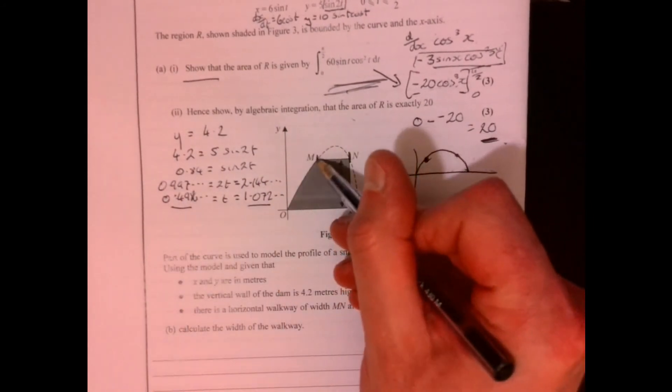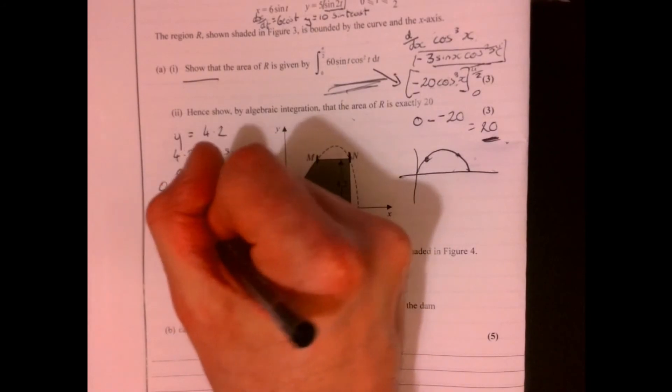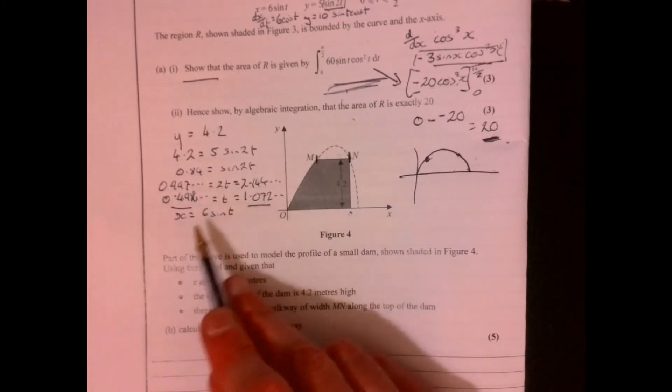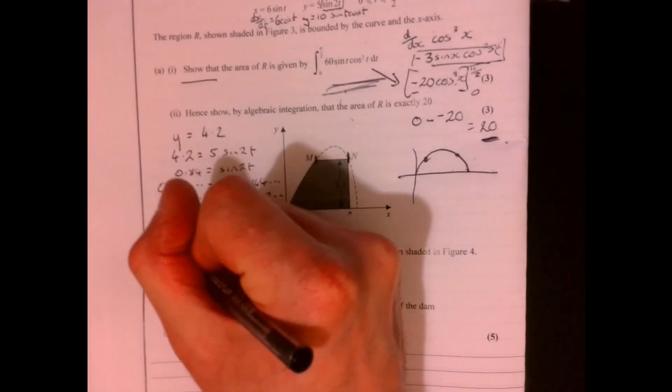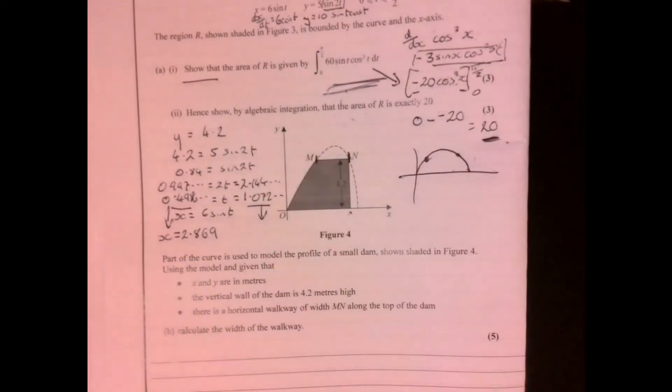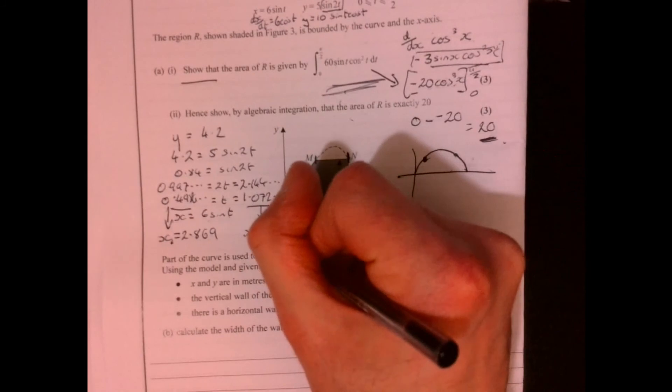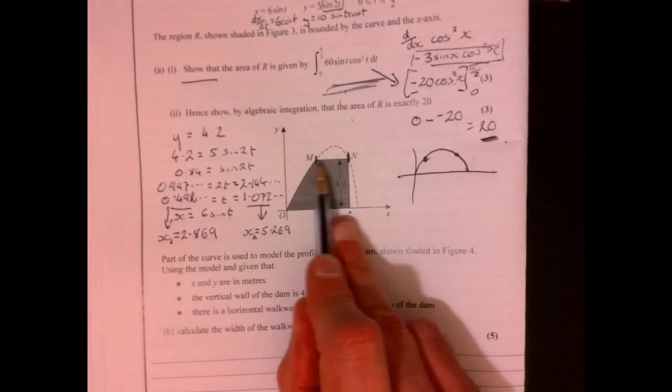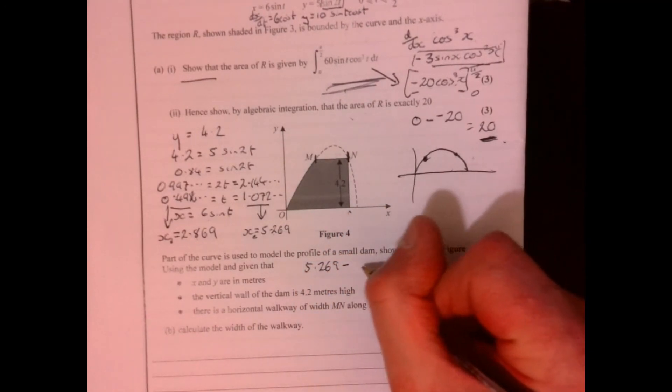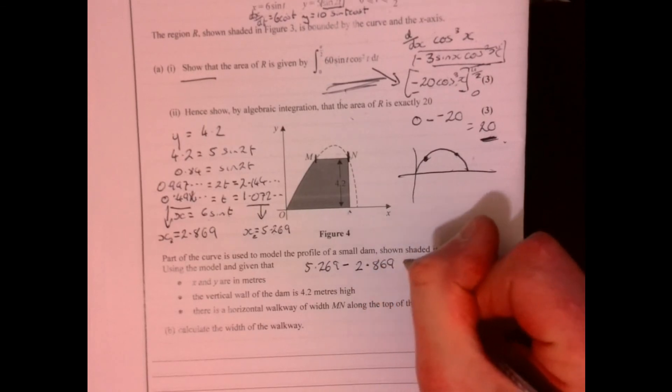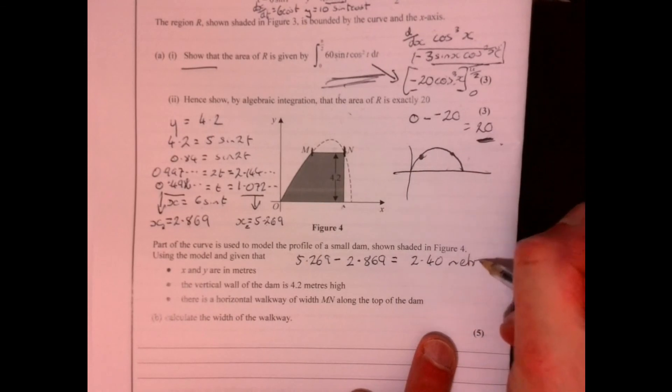So now we need to remember x equals 6 sine t. If we now just pop it into here, if we pop this one in first, that will give us x equals 2.869, and then pop that one in and we'll give you x equals, let's call that x1 and x2, 5.269. So then the distance here is this value take away this value, 5.26, now the best thing that you can do with these questions is just, let's not ignore the context but don't be put off by the context, just think right what's the maths bit going on here. So that gives me 2.4 meters.